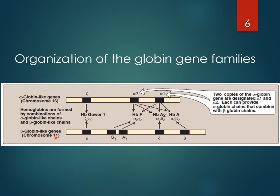Beta-globin-like genes on chromosome number 11 are five: beta, delta, two gamma genes (gamma-G and gamma-A), and eta. Similarly, the other pair of chromosome 11 also contains these five genes. So genomically, there are four alpha genes, two zeta, two beta, two delta, four gamma, and two eta genes in the human genome.